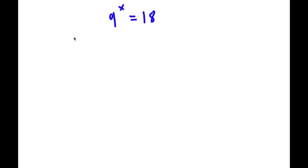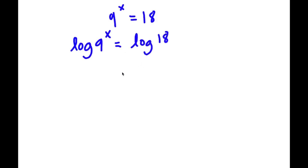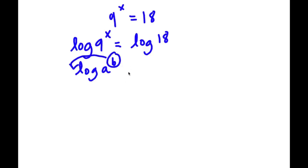The first thing I'm going to do is take the log on both sides. So now I have log 9 to the power of x is equal to log 18. An important property of logarithms is that if we have something in the form log a to the power of b, we can actually move this exponent b to the front of the logarithm. So this is going to equal b times log a.